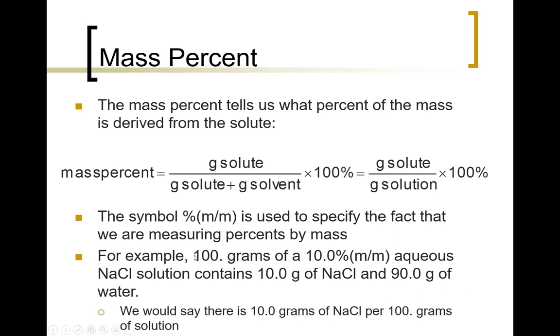So for example, let's say I had 100 grams of a 10.0 percent by mass sodium chloride solution. If I have 100 grams, then 10 grams of sodium chloride would be in that and 90 grams of water. Because if we look here, 10 grams of solute plus 90 grams of water would be a total of 100 grams of solution.